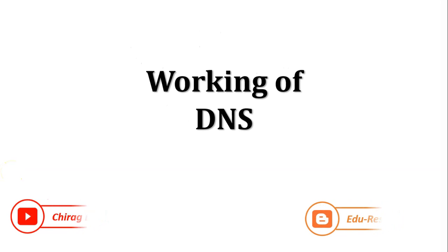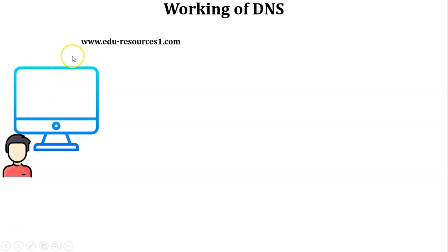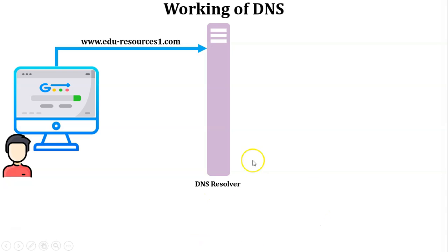Now let's look at the working of DNS with an example. There is one user who wants to access the website www.eduresources1.com. First, the user enters the URL into the web browser. The web browser sends this URL to the DNS resolver. The purpose of the DNS resolver is mapping a website name to an IP address, and an IP address to a website name.